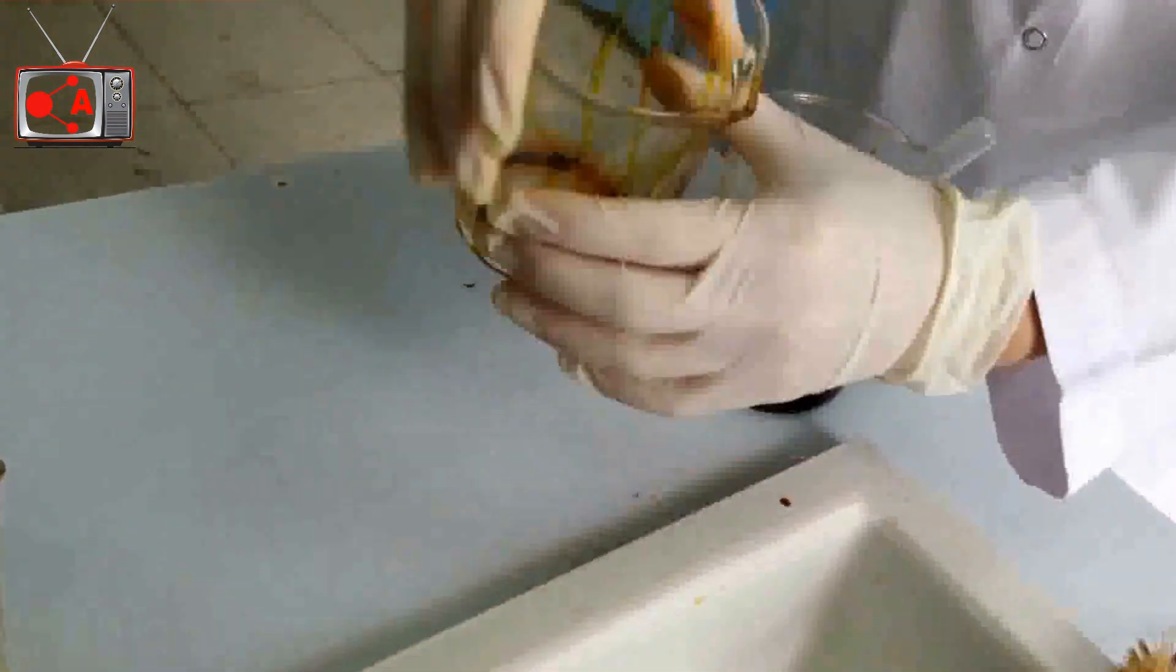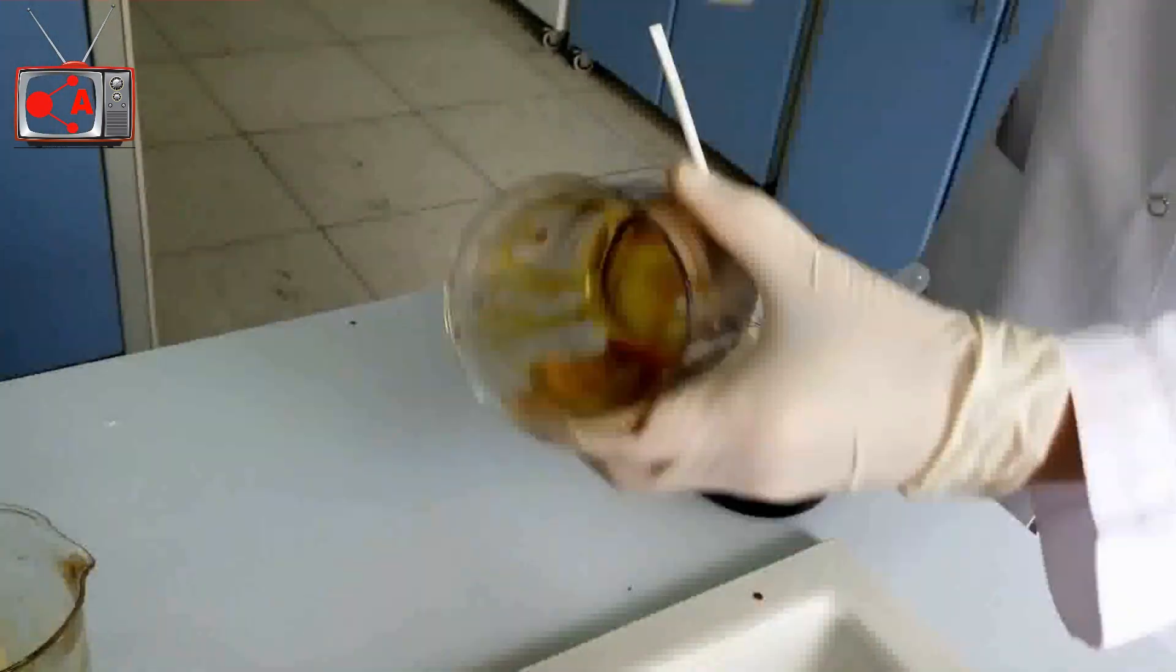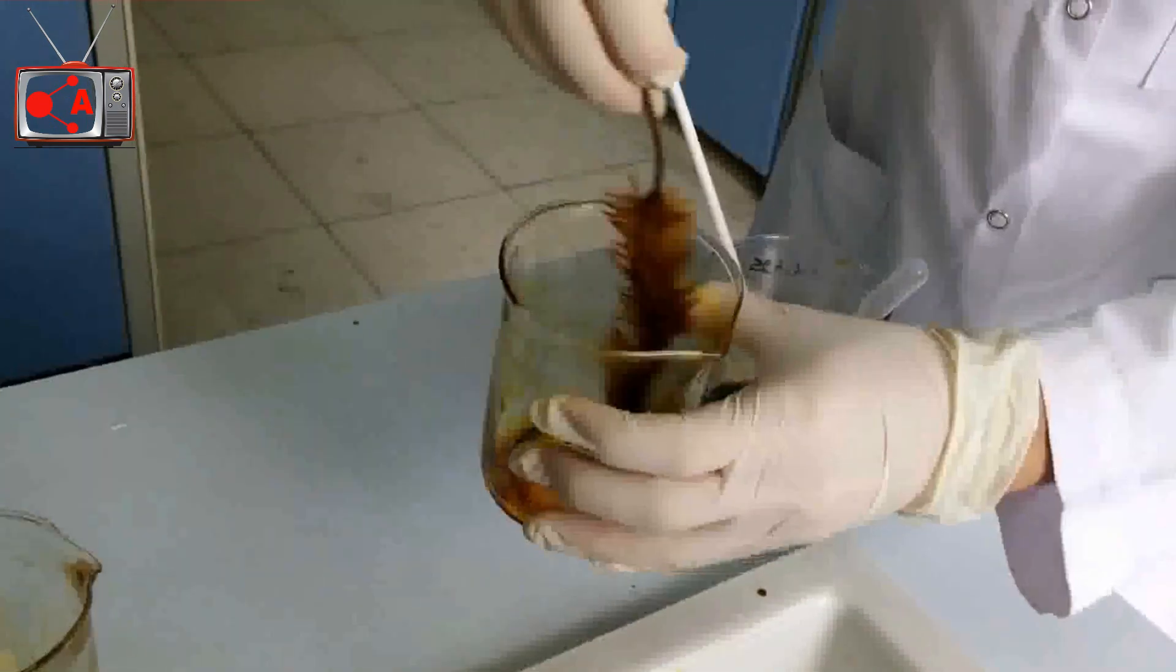We pour our chromic acid solution to the beaker by a dropper. Then we shake the beaker to spread the solution throughout the walls of the beaker.